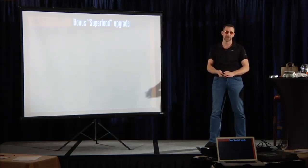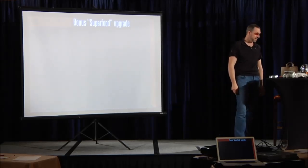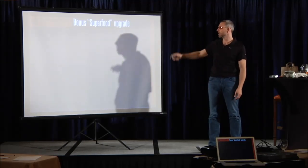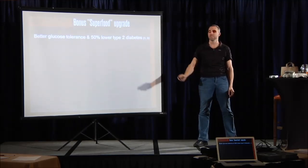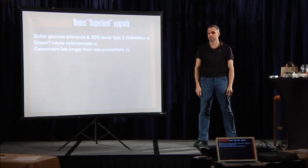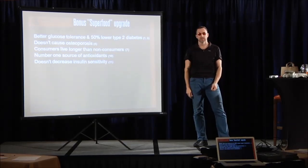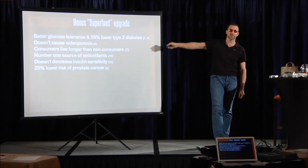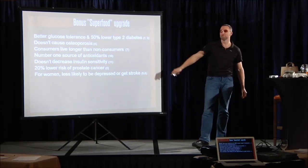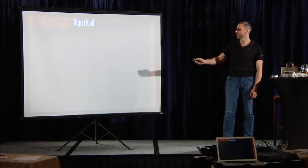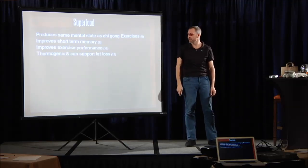People talk about superfoods all the time and honestly they are full of crap for the most part. Kale, the new superfood. What? Bacon is a superfood. That said, I have a prize for the person who can tell me what this is. This superfood will improve your glucose tolerance, lower your type 2 diabetes by 50 percent, not cause osteoporosis. People who take it live longer than those who don't. The number one source of antioxidants in your diet in the West. Doesn't decrease insulin sensitivity, 20 percent lower chance of prostate cancer. For women, 100 percent lower prostate cancer. For women less likely to be depressed or get stroke. And there's more. Produces the same mental state as doing Qi Gong. Improves your short term memory. Improves your exercise performance and tolerance. And makes you lose weight.